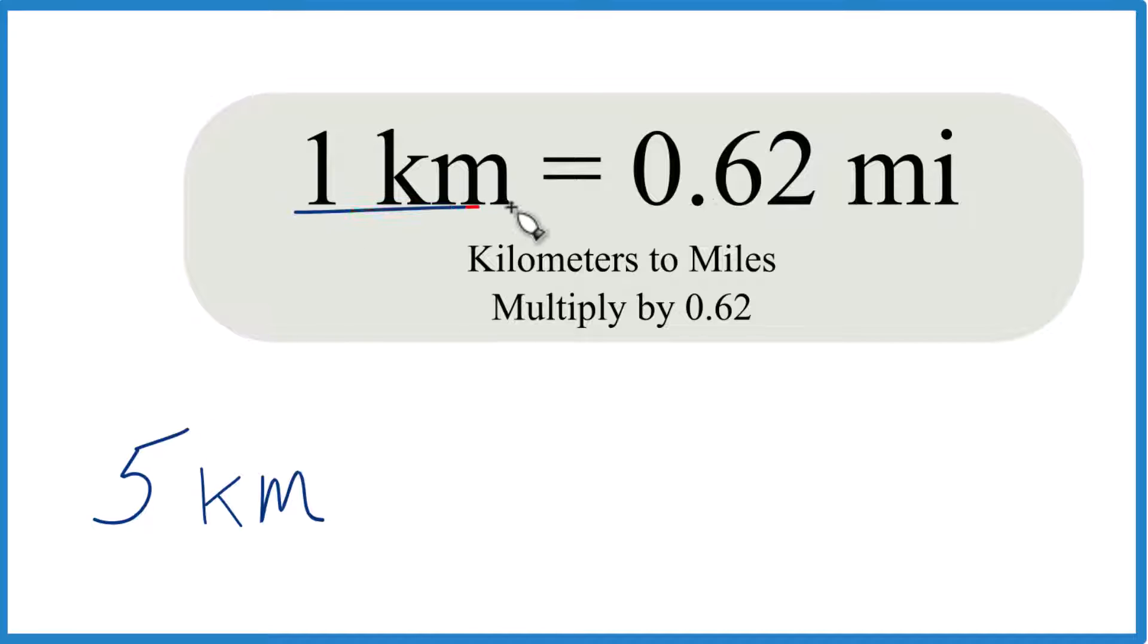So here's how you do it. One kilometer equals 0.62 miles. It's actually 0.62137, we're going to round it here. Some people just think 0.6 and they can do it in their heads.